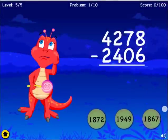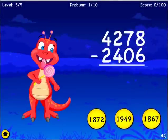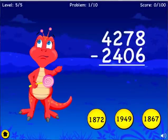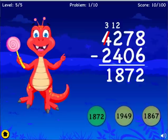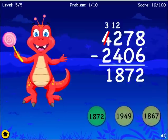What is four thousand two hundred and seventy-eight minus? You are right. The correct answer is one thousand eight hundred and seventy-two.